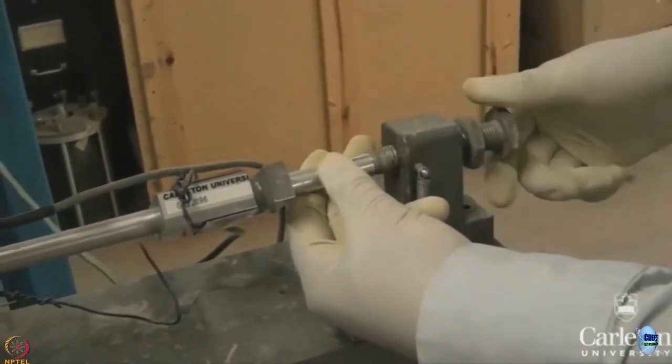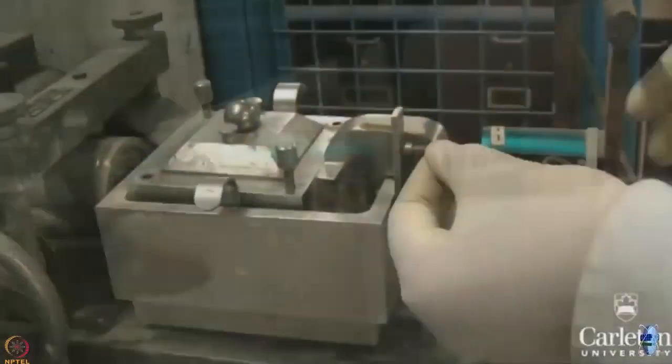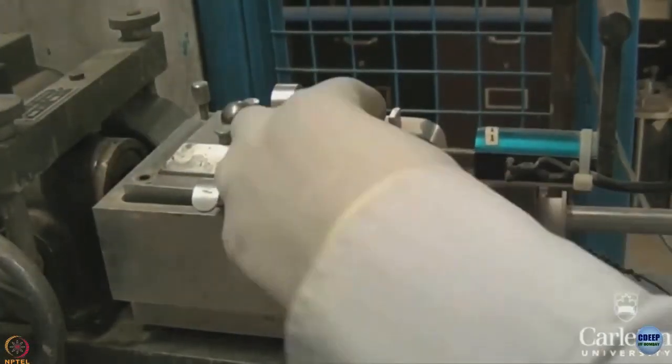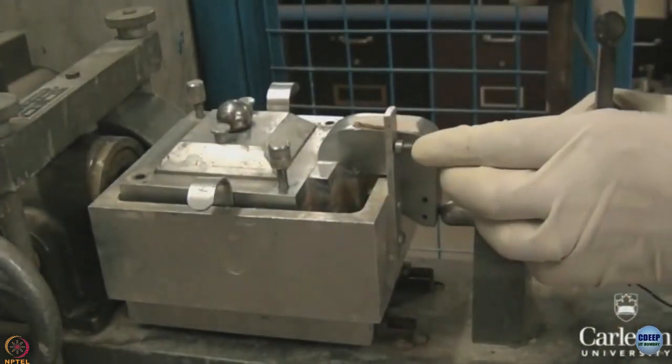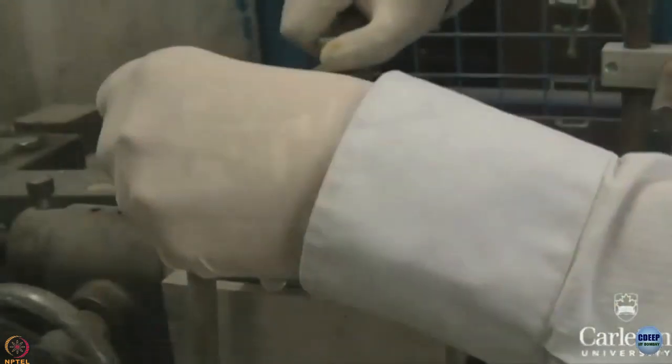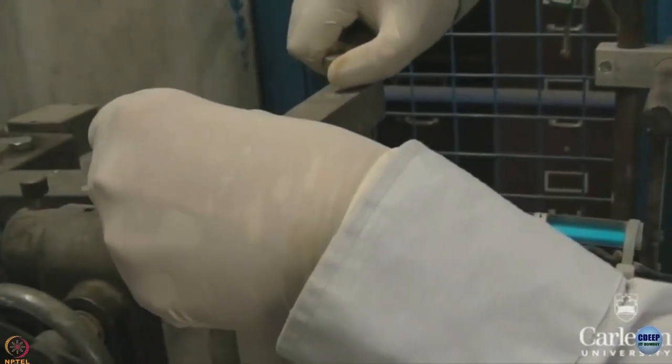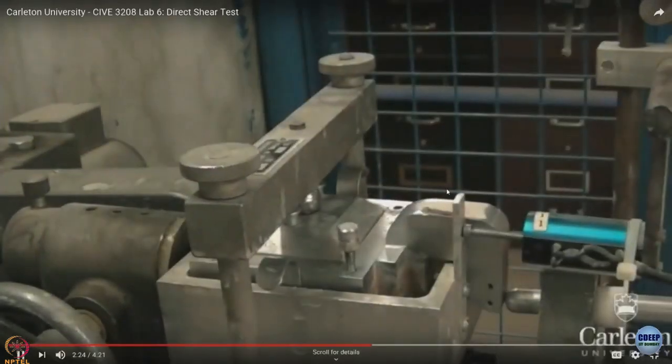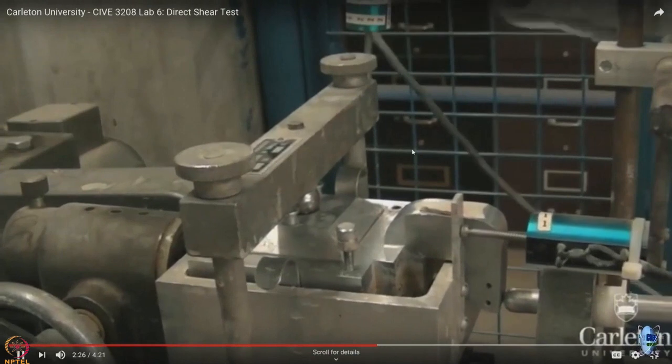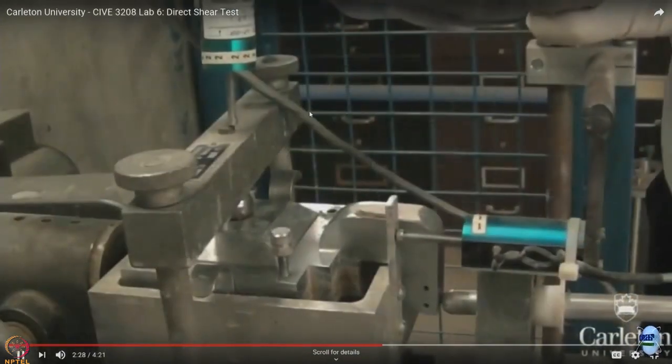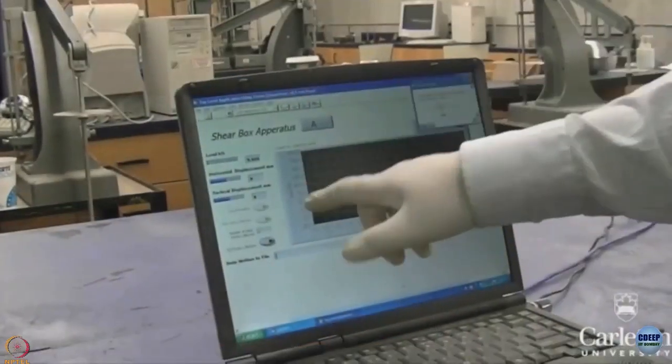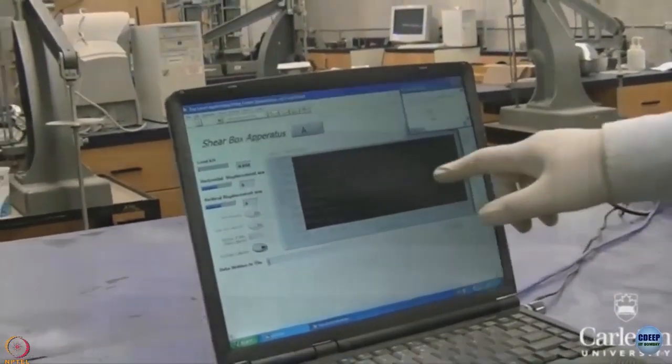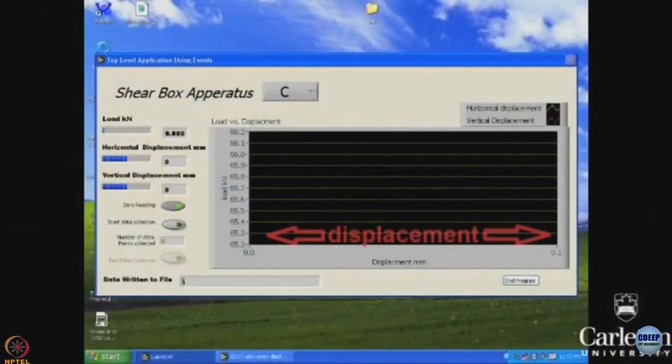Now this is how the lateral stresses which are going to come on the sample which is the shear stress can be determined. This is the vertical strain gauge which is fixed on the top of the sample to understand during shearing how much volume reduction the system is going to undergo.